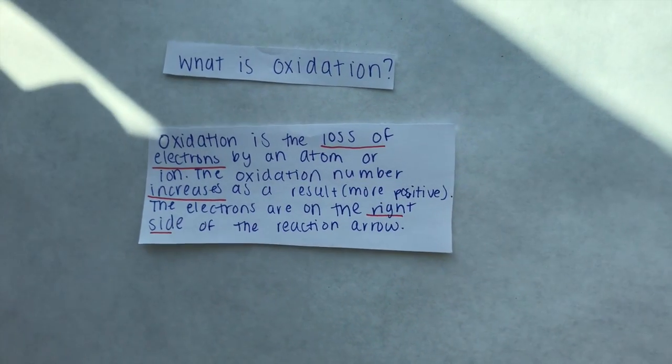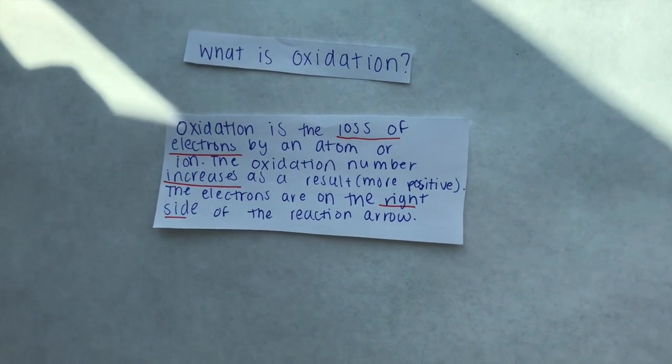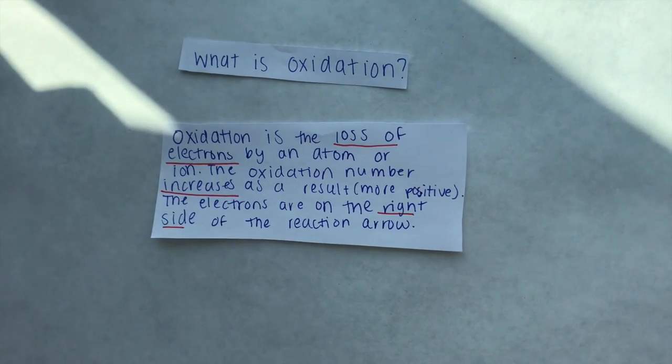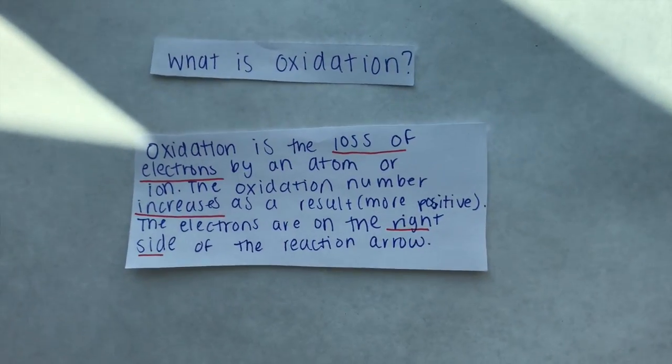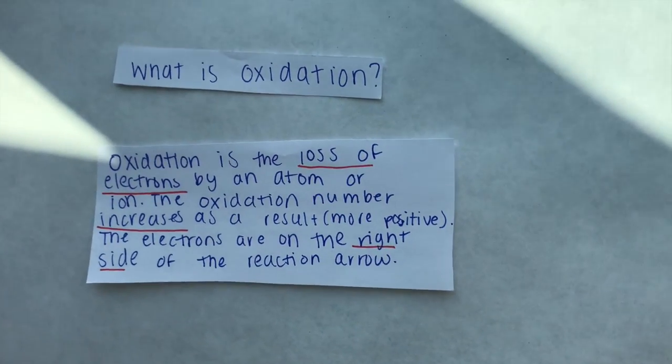Oxidation is the loss of electrons by an atom or ion. The oxidation number increases as a result, making the element more positive. In half reactions, these electrons are found on the right side of the reaction arrow.